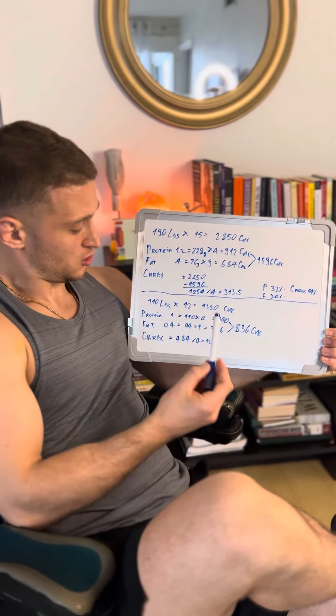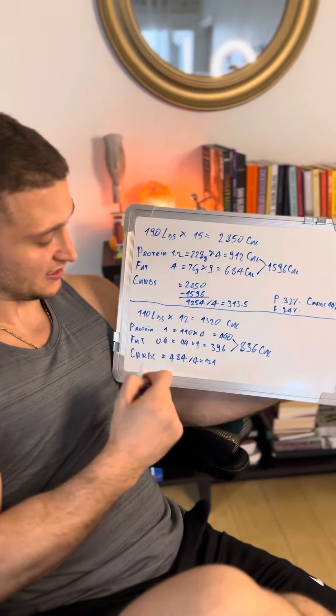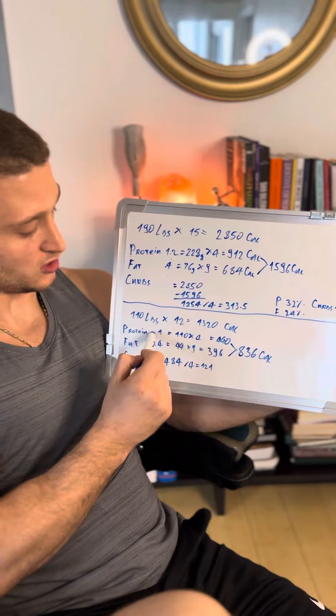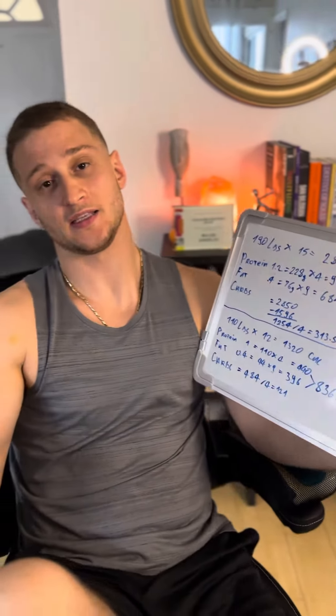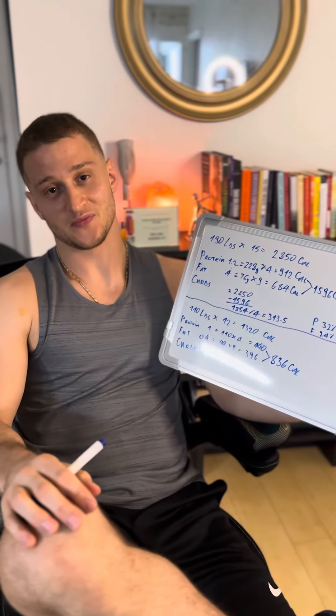If you're a female, you should do the same thing. Just instead of 15, you should be using number 12, and instead of 1.2, you should be using 0.8 or 1. I hope this makes sense because my girlfriend didn't get it. So, just let me know.